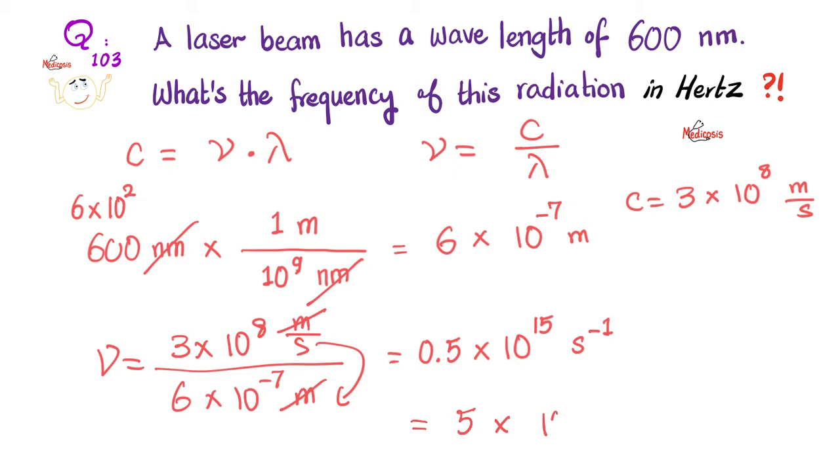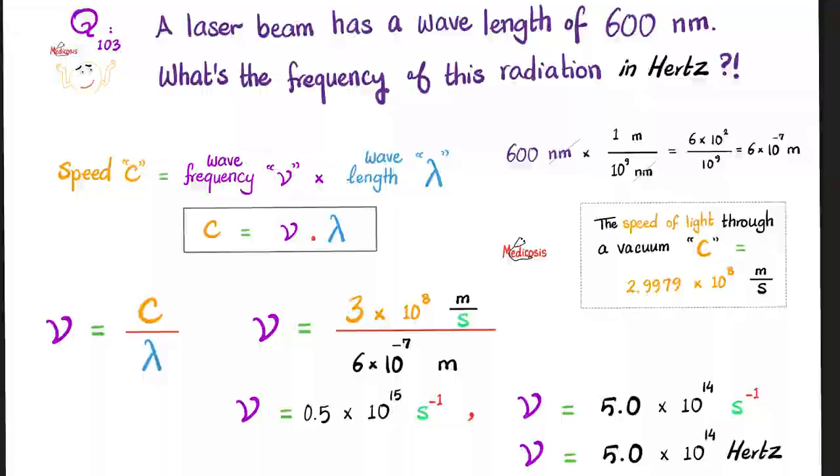Here's the thing. Is this a proper scientific notation? No. This value should be between 1 and 10, not 0.5, because this is less than 1. So I need to shift this decimal point forwards one step. And when you shift this forward one step, you have to decrease the exponent one step. So this will end up as 5 multiplied by 10 raised to the 14th power S to the negative 1 power. And as you know, S power negative 1 is the exact same thing as hertz. So we can write that the frequency of the wave is 5 times 10 to the 14th power hertz. And that's the correct answer.